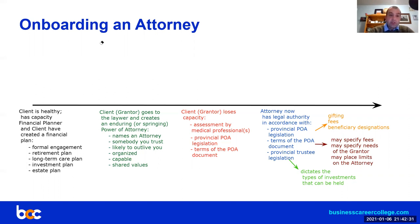The client, being a good client, goes to a lawyer to get their will and personal directive done, and along with that gets an enduring or springing power of attorney. We're going to call that person the grantor — the client becomes the grantor. That's the person who grants authority in a power of attorney document. The power of attorney document is designed so that if this person loses capacity, there will be an attorney who can step in and make financial and other administrative decisions for them.